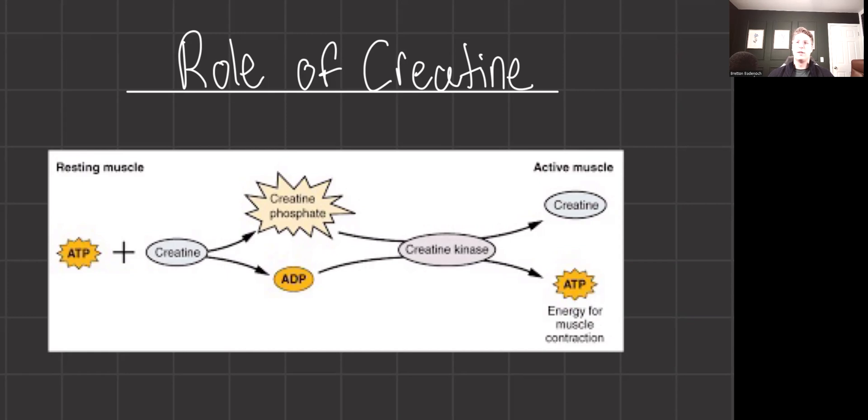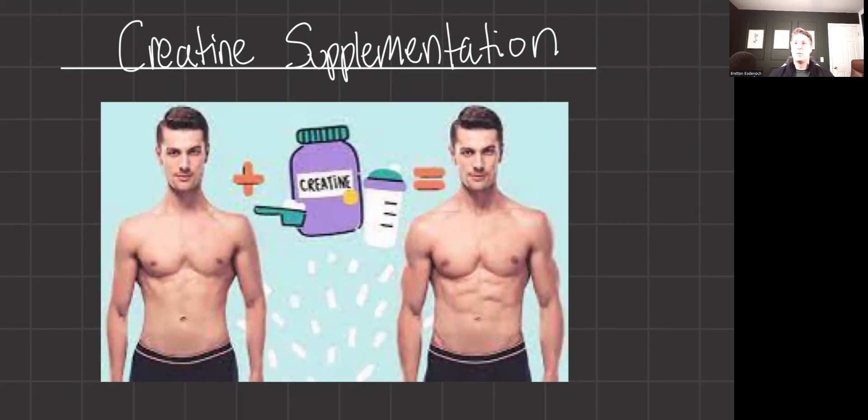This process is vital during the initial stages of high-intensity exercise when the demand for ATP exceeds the supply from cellular respiration. Creatine supplementation boosts the available creatine phosphate in muscles, enhancing the capacity for quick ATP regeneration.